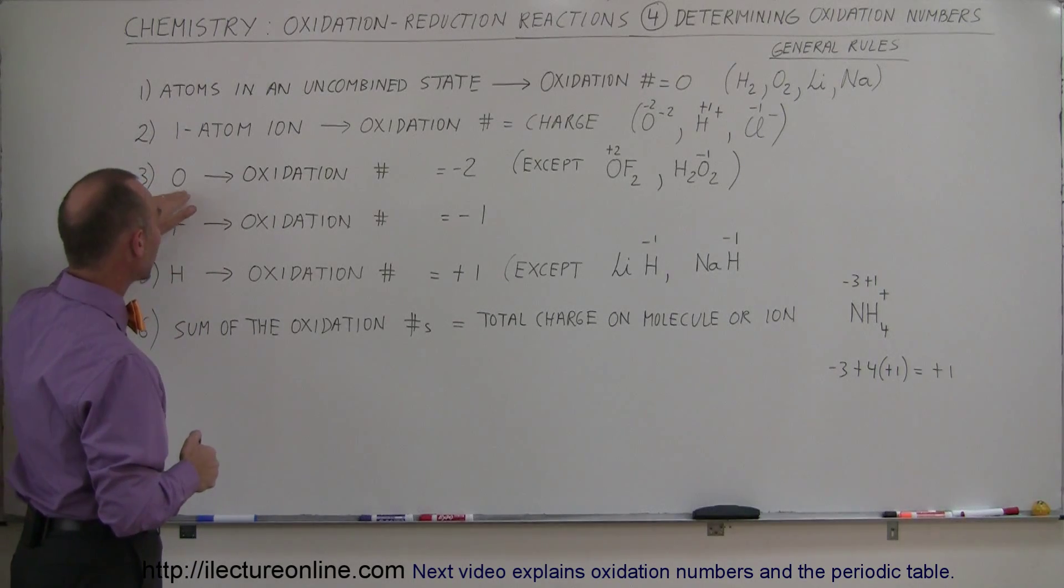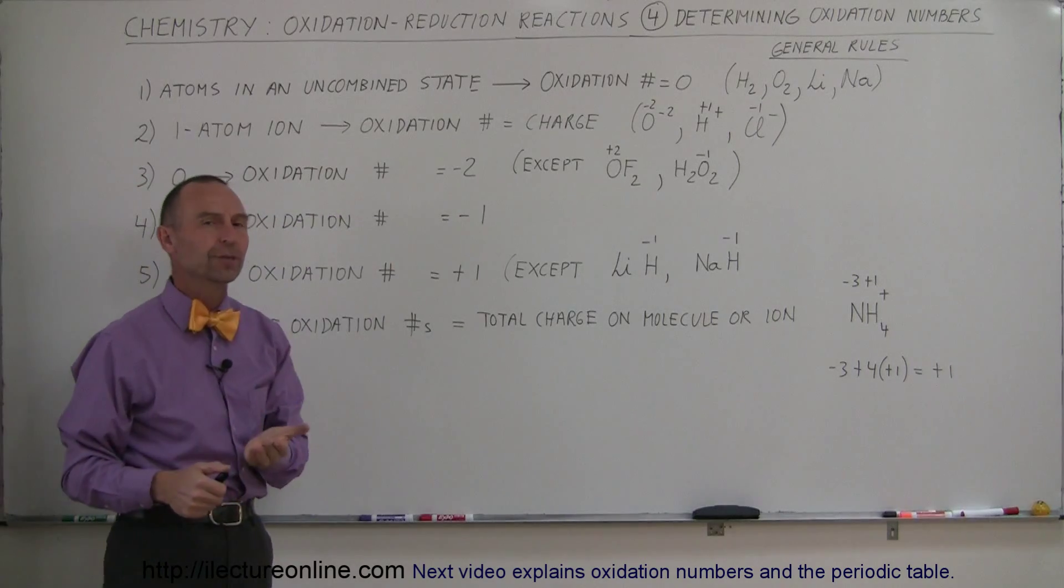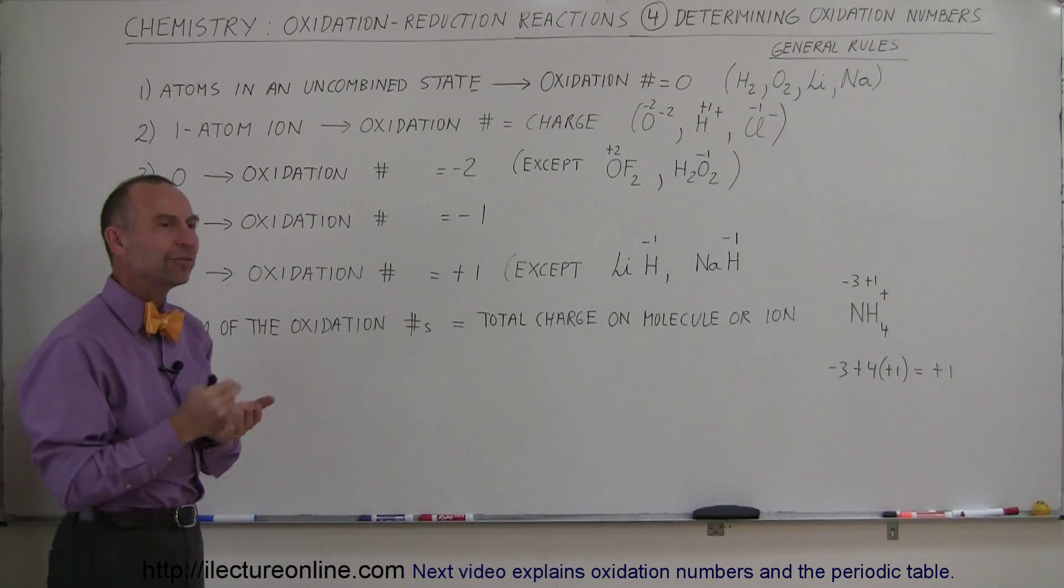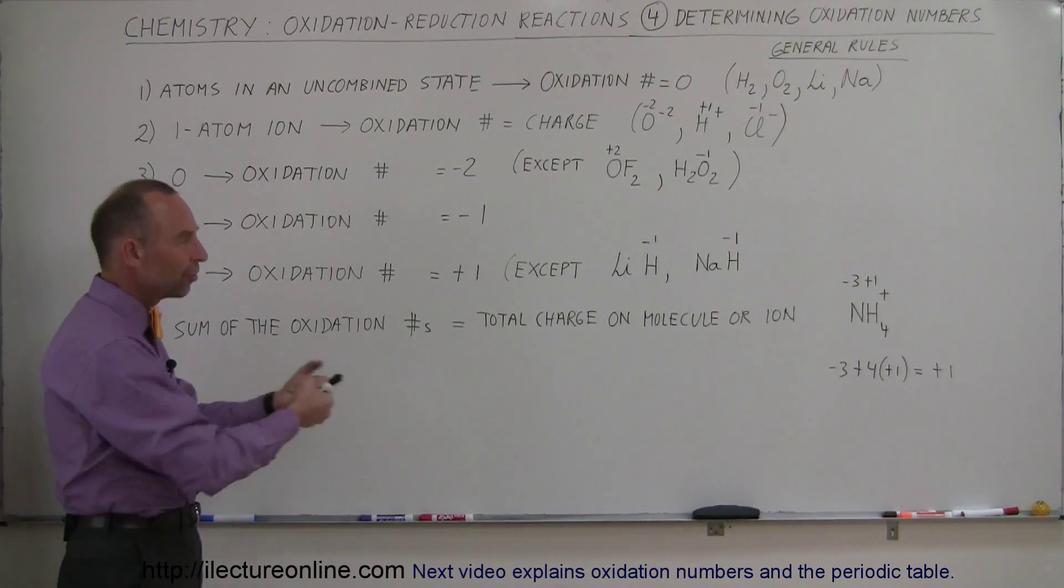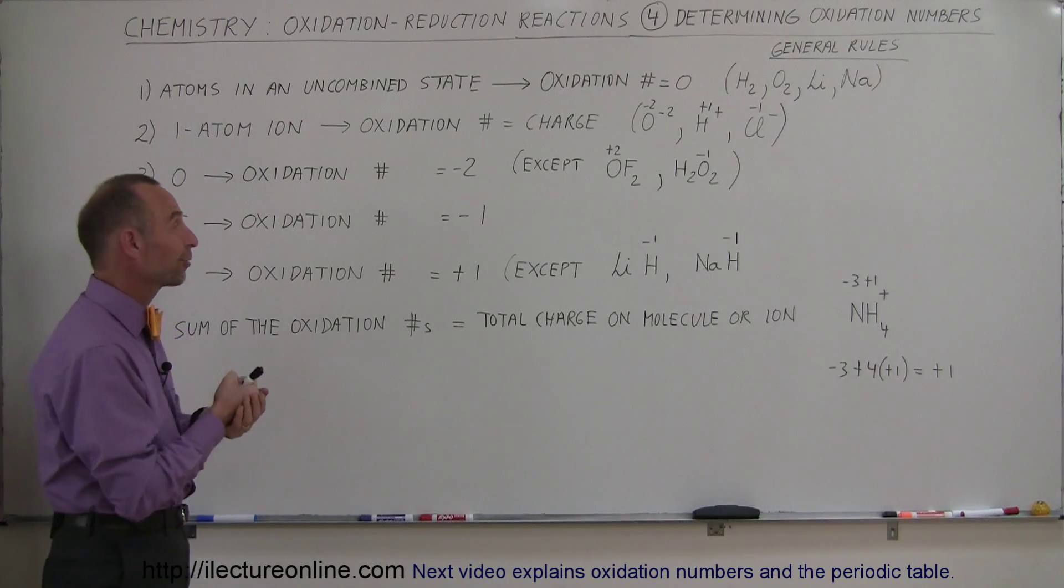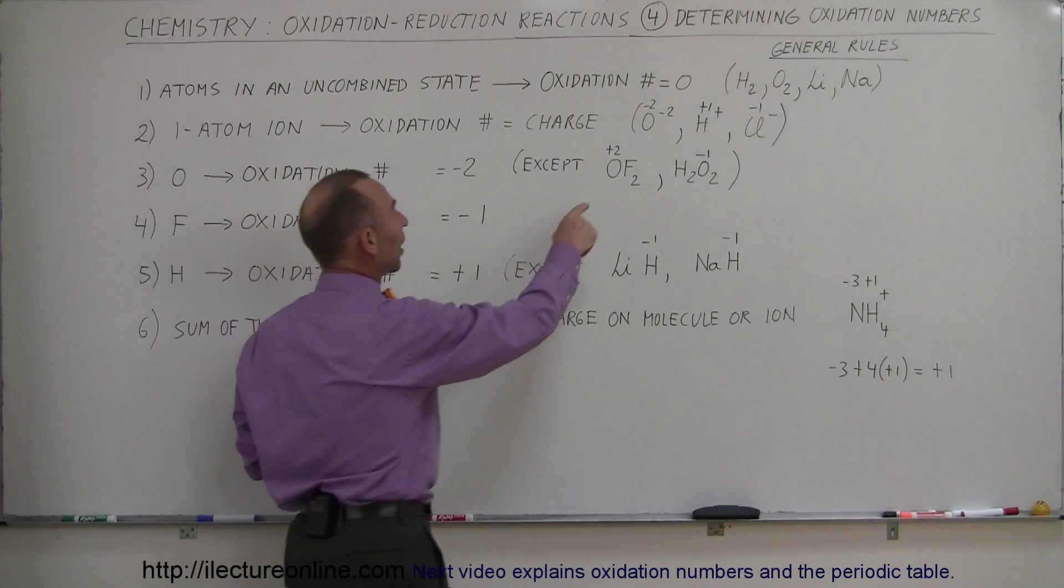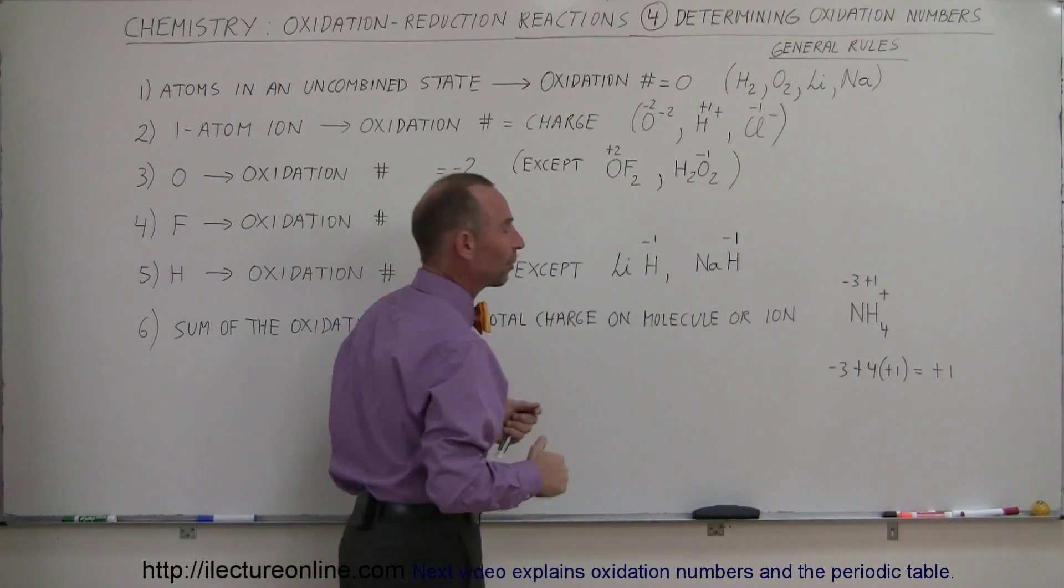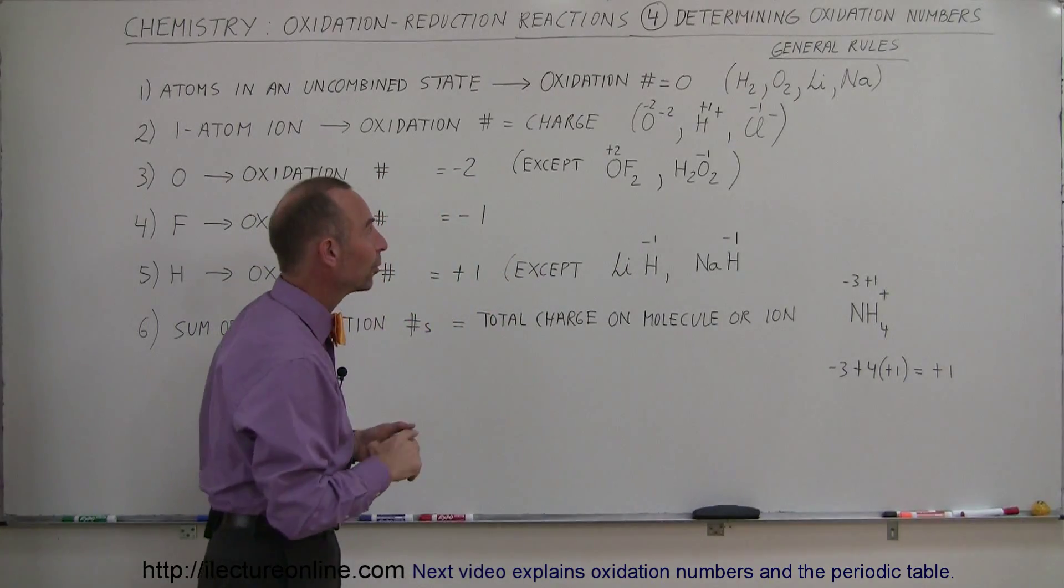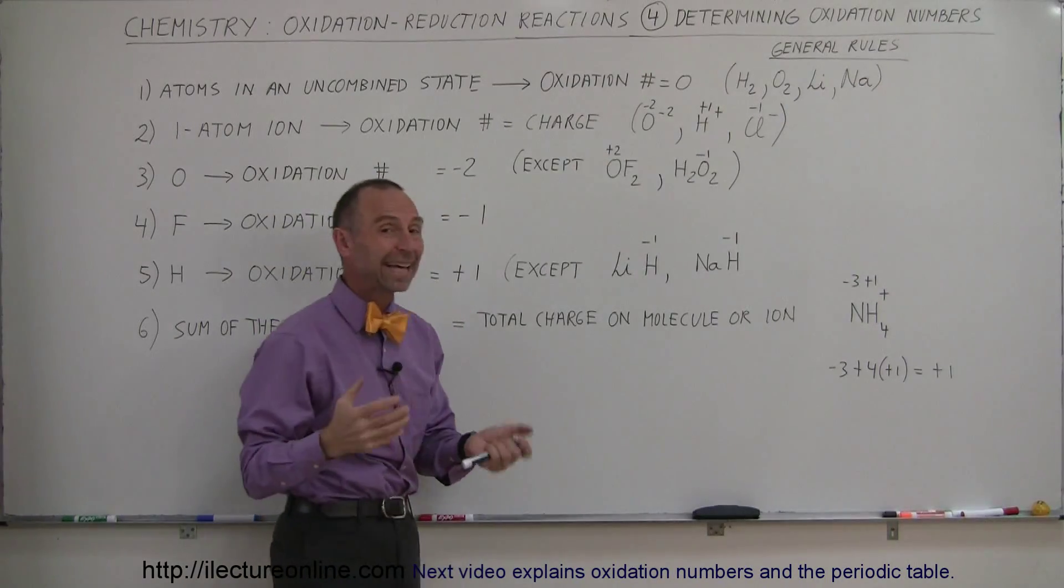Next, when we're dealing with oxygen, the oxidation number is almost always negative two. Oxygen is very electronegative. It's an oxidizer, it steals electrons from other atoms, so typically, it will steal two electrons for every oxygen atom. There are some exceptions, however. For example, when oxygen combines with fluorine, so we have oxygen difluoride, you will see that the oxidation number is different. It's a positive two instead of the typical negative two.